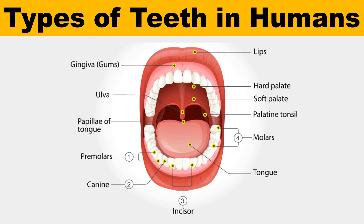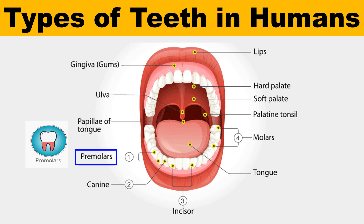Now the types of teeth in humans. Humans basically have four types of teeth. The first type is premolars, also called bicuspid teeth, located behind the canines. These teeth have a flat surface with ridges and are specially adapted for crushing and grinding food into smaller portions. Humans have eight premolars, two on each side of both jaws.